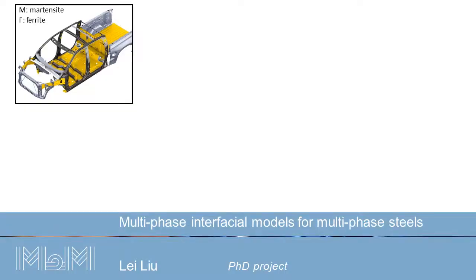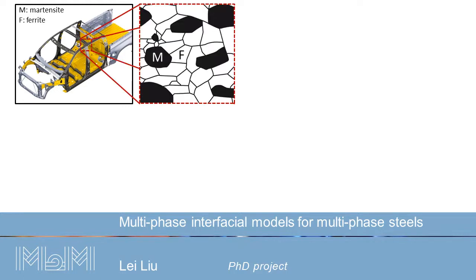Dual-phase steels are one of the most attractive advanced multi-phase steels developed for the automotive industry. Their meso-structure mainly consists of a few hard modern-sized islands embedded in a soft ferrite matrix.